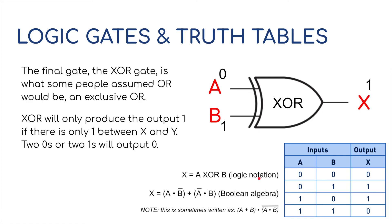So logic notation, nice and easy. A XOR B. But in terms of Boolean algebra, you've got quite a big statement here going on. You've got A and NOT B or NOT A and B. It's sometimes written to make it a little bit easier. A or B and NOT A and B. A little bit confusing, but that is the final gate that we'll be using.